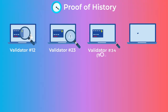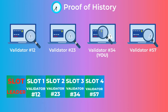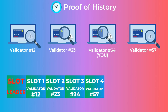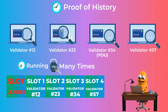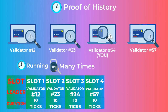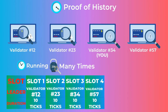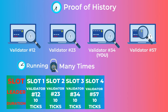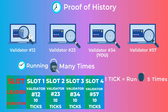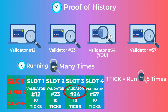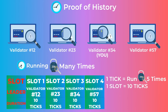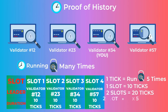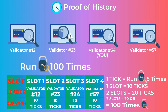Now let's get to Proof of History. Remember the slots — each slot has a leader and the next leaders are known according to the leader schedule. All leaders count time by running the hash function many times. Each slot has a specific duration counted not in seconds but in something called ticks. For example, the duration of one slot may be 10 ticks, and to count one tick you run the hash function five times. So if you are the third leader, you need to count 20 ticks — running the hash function 100 times — before producing your block.